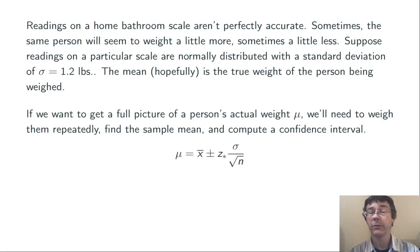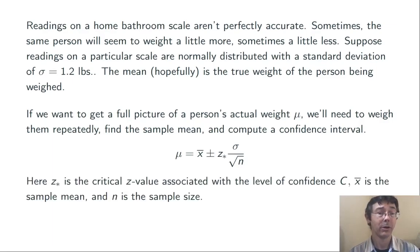We're going to weigh a person repeatedly, find the sample mean of those weighings, and then use this formula: μ = x̄ ± z*σ/√n. Of course, x̄ is going to be the sample mean, n is the sample size, σ is the population standard deviation, z* is going to be the critical z value corresponding to the level of confidence C.